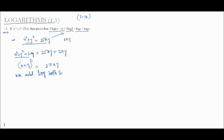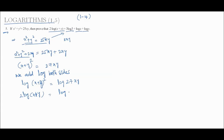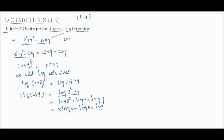Log of (x plus y) whole square equals log of 27xy. So we can write it as 2 into log(x plus y) equals log of 3 cubed times xy. Expanding: log of 3 cube plus log x plus log y, which gives 3 into log 3 plus log x plus log y. This is the answer.